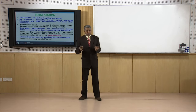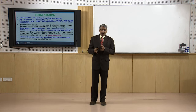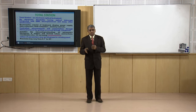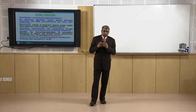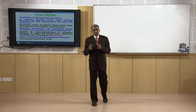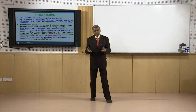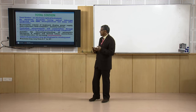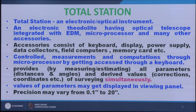A total station is an instrument which is basically an electronic instrument with some optical features. Fundamentally it is an electronic theodolite with an optical telescope, integrated with an electronic distance measuring instrument (EDM), and also interfaced with a microprocessor and many accessories like a keyboard, display unit, data collector, and a field computer.